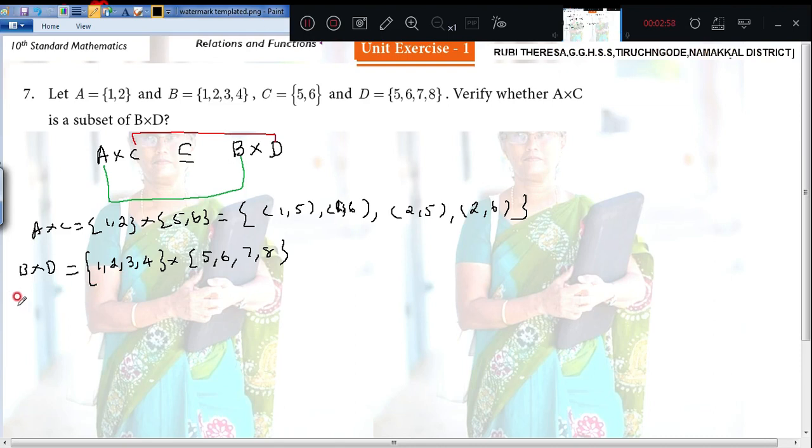So now you write the ordered pairs. 1 is paired with 5, 6, 7 and 8. So 1 comma 5, 1 comma 6, 1 comma 7, 1 comma 8. Those who want to write down also, you can write it. 2 comma 5, 2 comma 6, 2 comma 7, 2 comma 8.